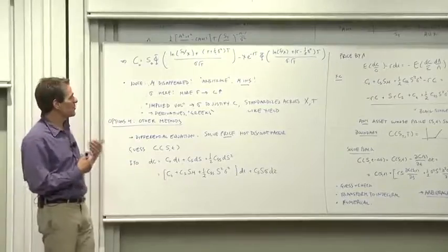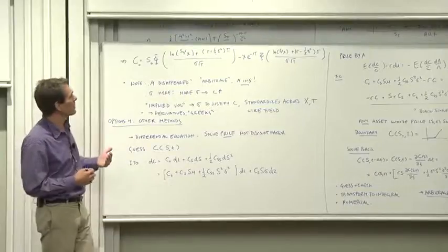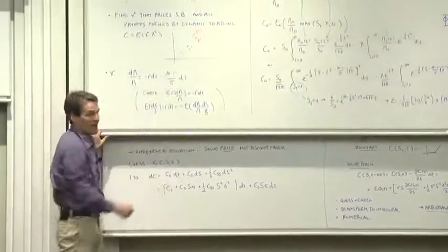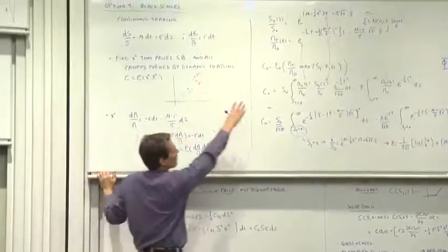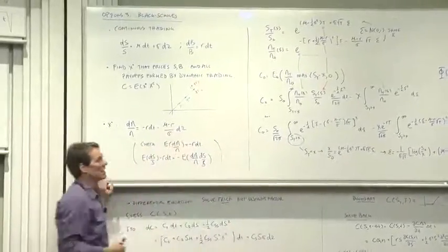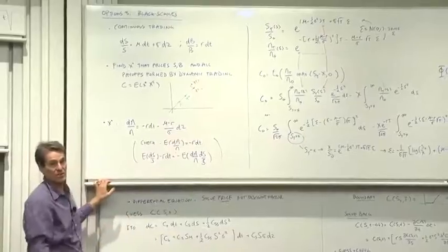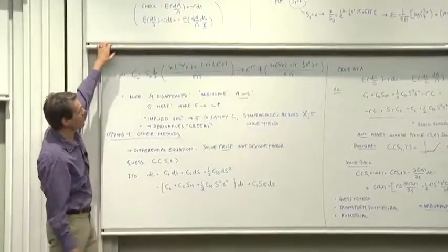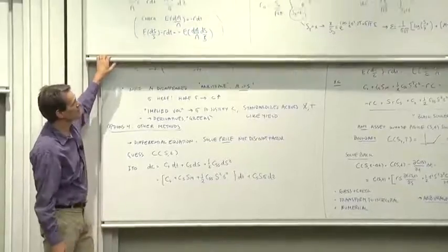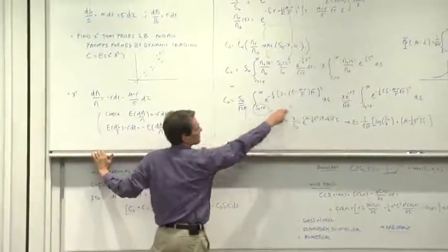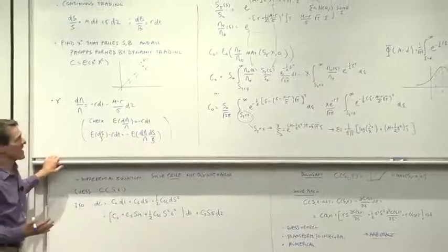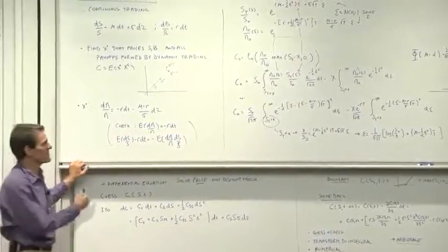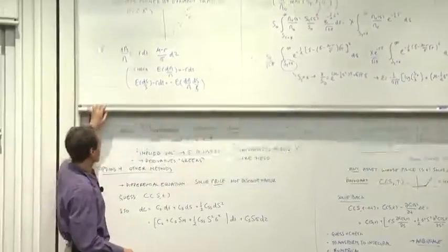The method we did last time to figure out the option price is we found the differential equation for the discount factor, solved that forward, and then found price from the solved forward differential equation for the discount factor. That's a method that works in this case, but it requires you to solve some pretty hairy integrals. And you might imagine that in more complex models, solving those hairy integrals wouldn't be as easy.